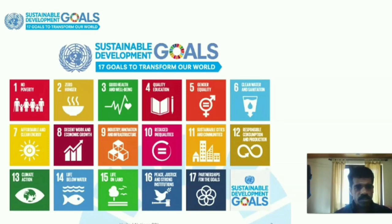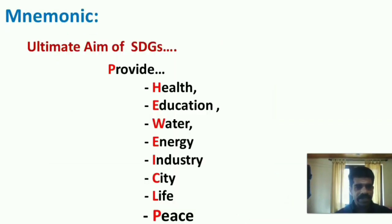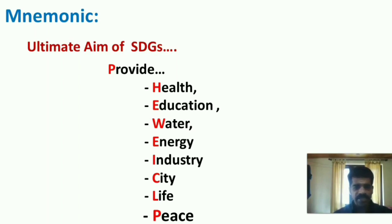There are 17 goals to transform our world. The mnemonic has been set in three parts. The first part — the ultimate aim of Sustainable Development Goals — is to provide Health, Education, Water, Energy, Industry, City, Life, and Peace.